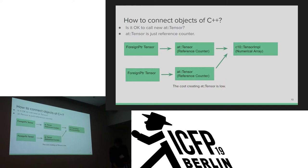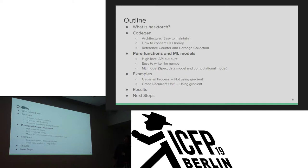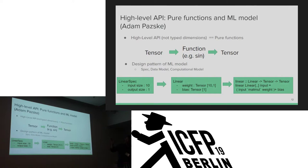Next, I'll show the high-level API and machine learning model. Adam made a great contribution to developing the high-level API as pure functions. It does not use IO Monad. They provide a design pattern for machine learning consisting of three parts: Spec, Data Model, and Computational Model. I'll show the details in the next slide.